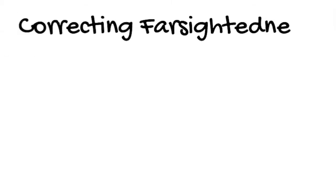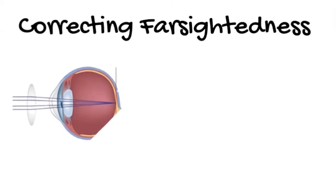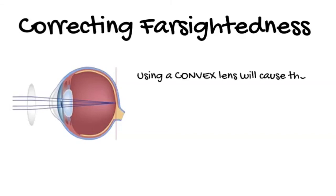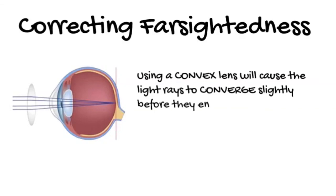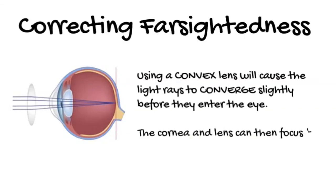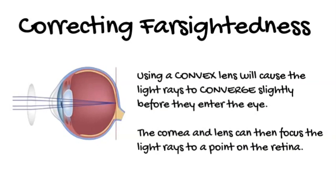To correct farsightedness, we need to bring the light rays closer together before they hit the eye. Using a convex lens will cause the light rays to converge slightly before they enter the eye. The cornea and lens can then focus the light rays to a point on the retina.